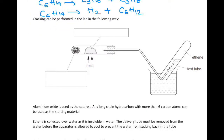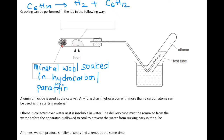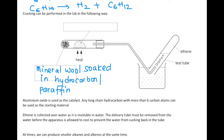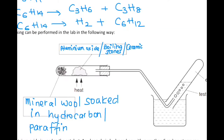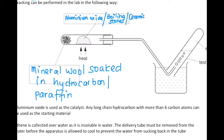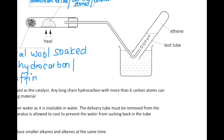Cracking can also be performed in the lab. In the apparatus, mineral wool soaked in hydrocarbon or paraffin provides the mixture of alkanes and alkenes. The catalyst — aluminium oxide or ceramic boiling stones — is placed separately. The catalyst is heated first to get it very hot, then the hydrocarbon is heated to release vapor. At high temperature, the hydrocarbon breaks down into alkanes and alkenes.